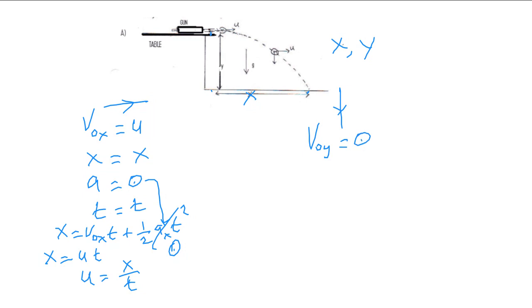The acceleration in the Y direction is going to be plus 9.8 because I am using my downward direction as positive here. So A Y is plus 9.8 and the Y distance we know we are going to measure that. We do have three things here so we can figure out time.